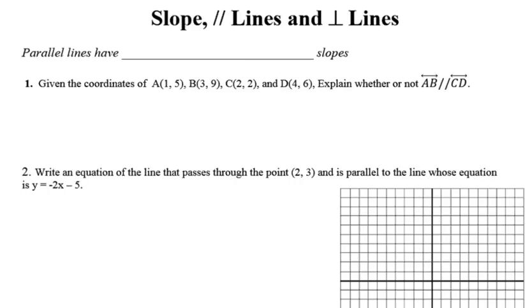Recall from your previous math classes that when two lines are parallel, they always have either equal slopes or the same slopes. So if we're asked to determine whether or not two lines are parallel, what we really want to do is look at and compare their slopes. If the slopes are exactly the same, then we can conclude that the lines are indeed parallel. If their slopes are different, then we know that the lines are not parallel.